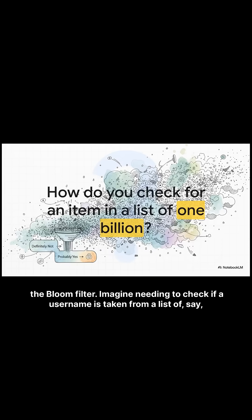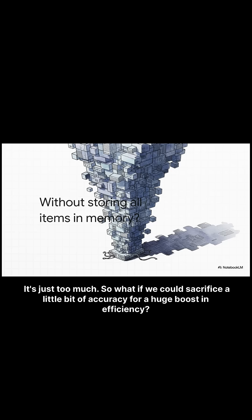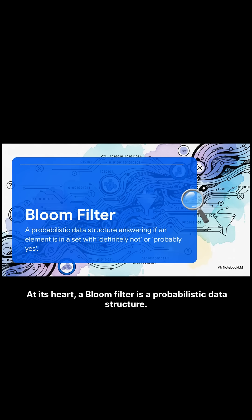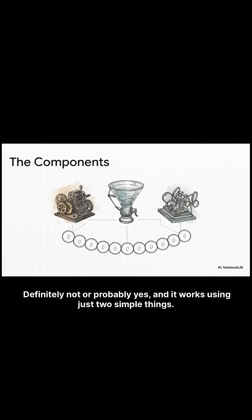Imagine needing to check if a username is taken from a list of say a billion others — but you can't just store all billion items in memory, it's just too much. What if we could sacrifice a little bit of accuracy for a huge boost in efficiency? At its heart, a bloom filter is a probabilistic data structure. It only gives two answers: definitely not, or probably yes.